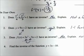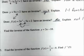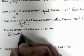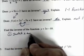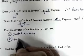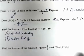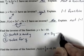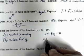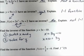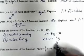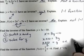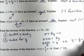Find the inverse of y = 3x − 10. Switch x and y and then solve for y: x = 3y − 10. Add 10 to both sides: x + 10 = 3y. Divide both sides by 3: y = (x + 10)/3, or equivalently y = ⅓x + 10/3.